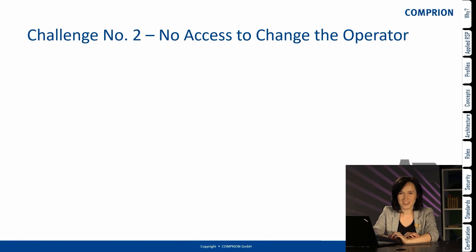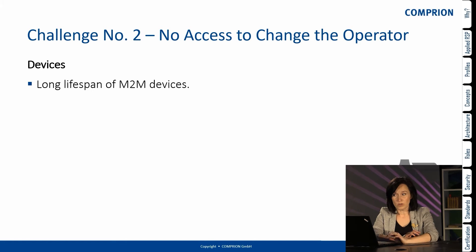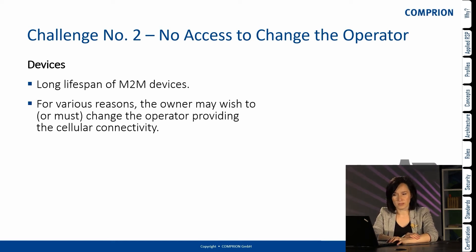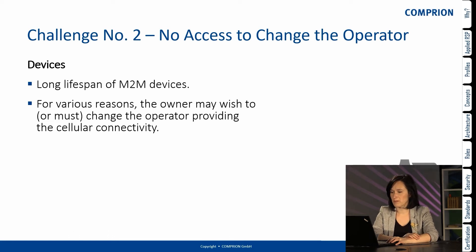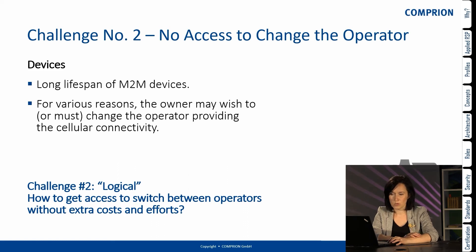The second challenge is the question of access. Imagine the same wind turbine in the middle of Siberia or the oil pipe in the ocean, and imagine the situation where you have to change the operator — how will you do it? Devices quite often have a long lifespan, especially in the M2M area — machine to machine. It can be the case that the operator disappears, or the contract becomes inappropriate. So how will you switch operators without extra costs and effort? This is what I call the logical challenge.